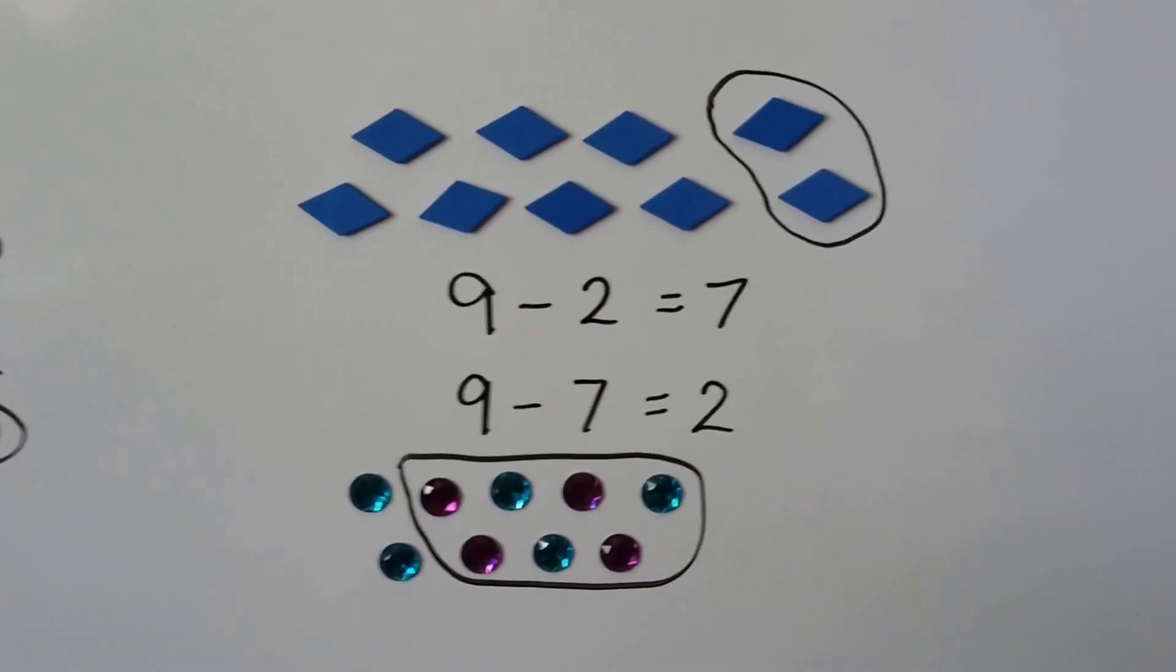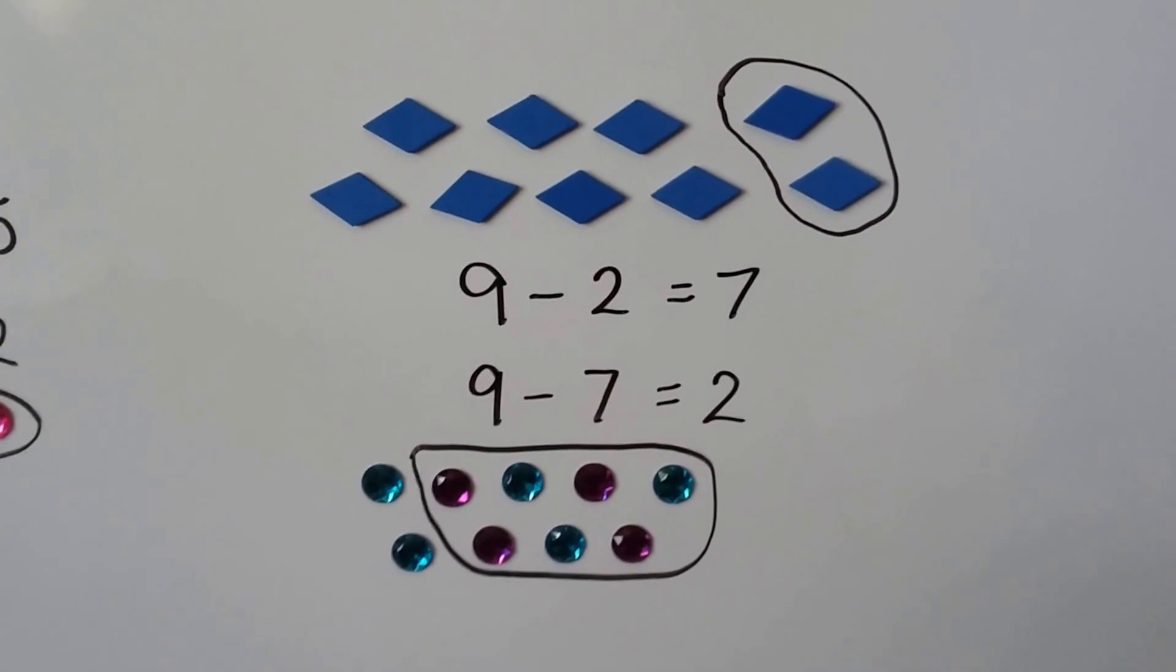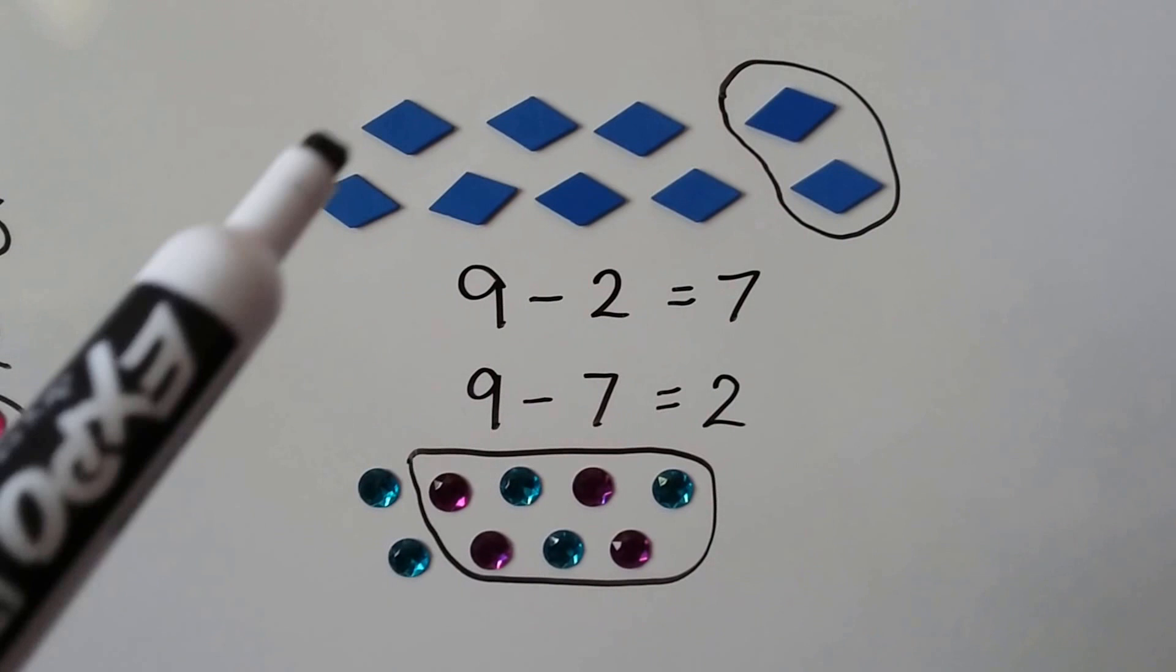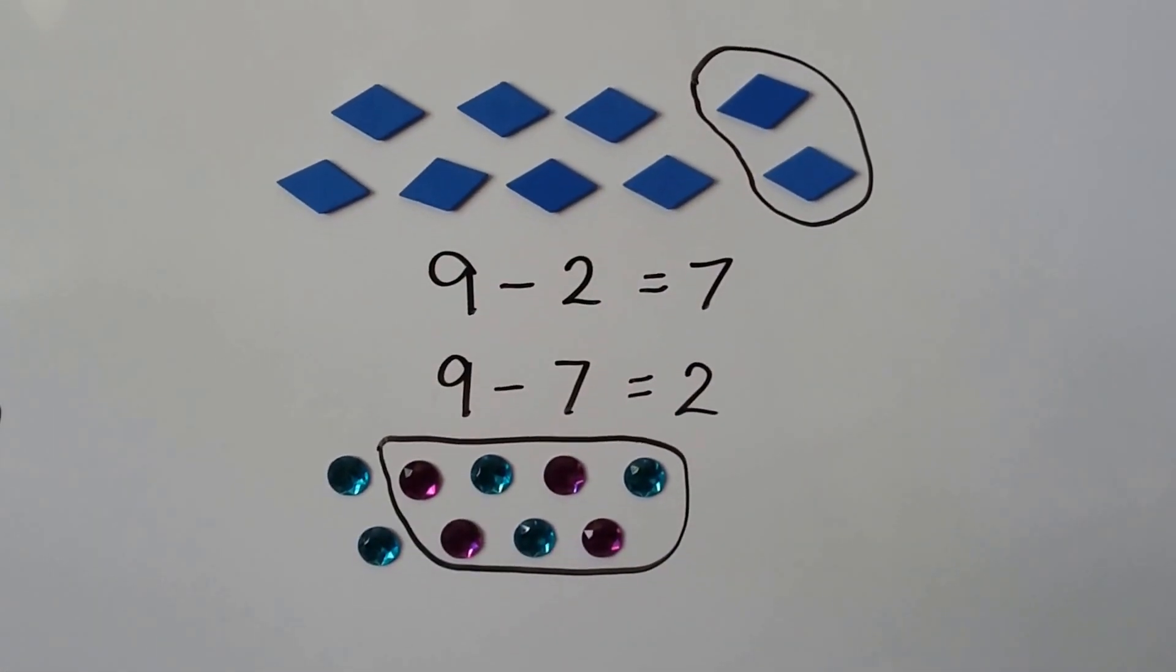Now we have 9 blue diamonds, and if we take 2 of them away... 9 minus 2 equals 7. We've got 1, 2, 3, 4, 5, 6, 7 left that are outside the circle.